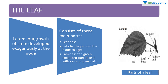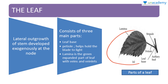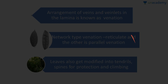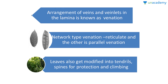The leaf is a lateral outgrowth of stem, developed exogenously at the node. It consists of three main parts: the leaf base, petiole — which helps hold the blade to light — and lamina, which is the green expanded part of the leaf with veins and veinlets. The arrangement of these veins and veinlets is known as venation. A network type of venation is known as reticulate venation, and the other type where veins run parallel is known as parallel venation.